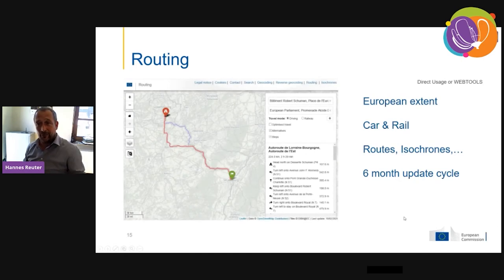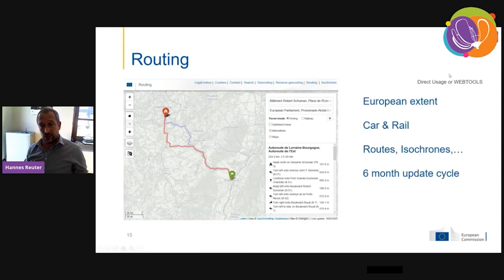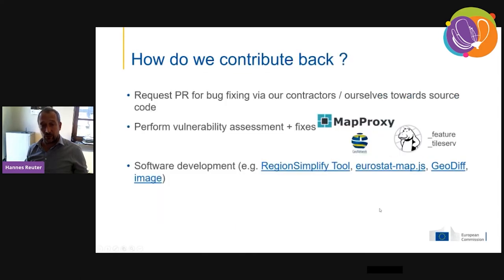For routing, we use an OSRM instance for the European extent. We only support car and rail for now, and we update it every six months. We also have commercial data sources for our analytical tasks in the backend, but for public-facing websites, we use the OSRM instance with OpenStreetMap data.